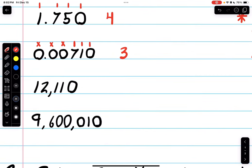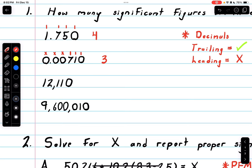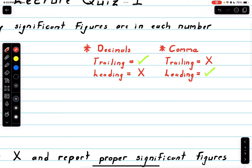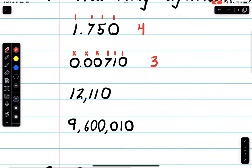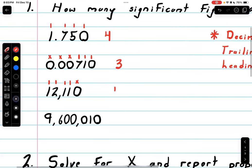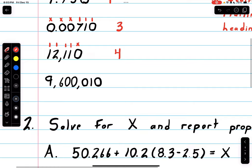Next we have 12,110, which now has a comma, completely different. I've also provided a little key. In this case it's basically the opposite of decimals: trailing zeros are not significant, leading zeros are significant. We have one, two, three, four. The fifth number doesn't count because it's a trailing zero in a comma. Four sig figs.